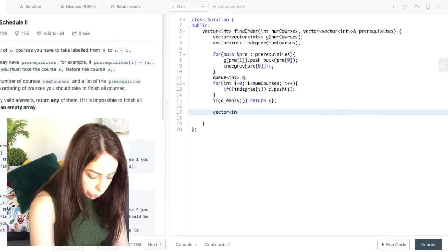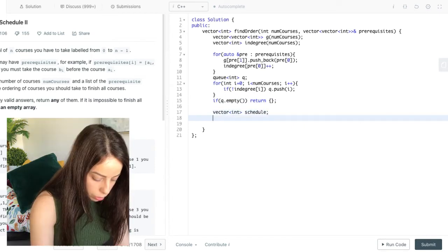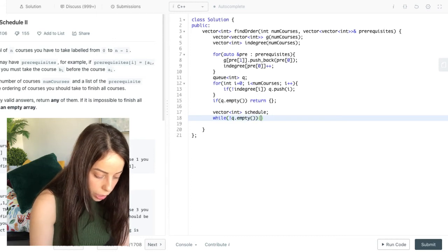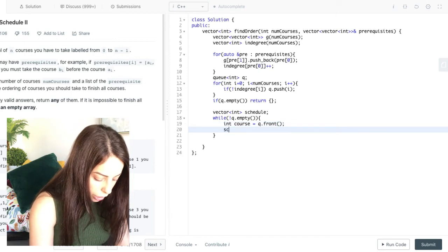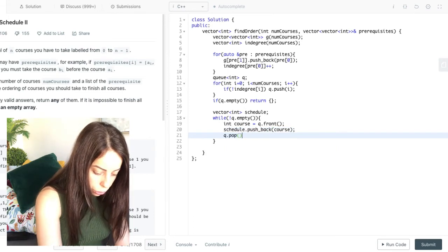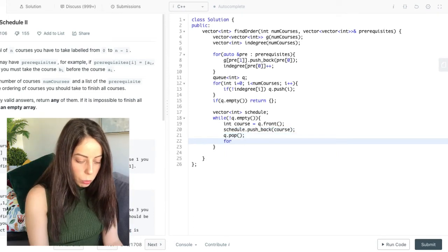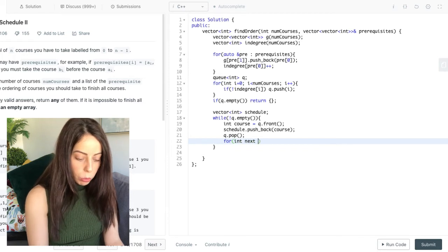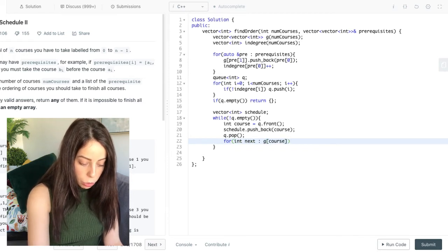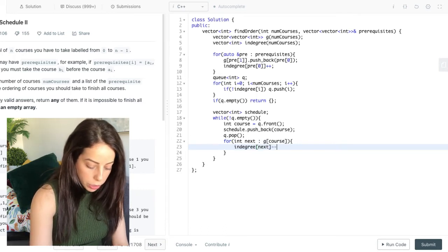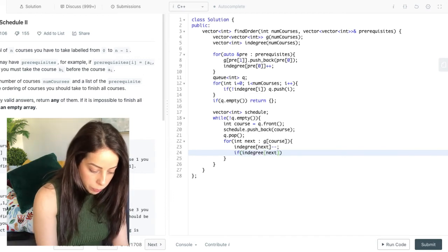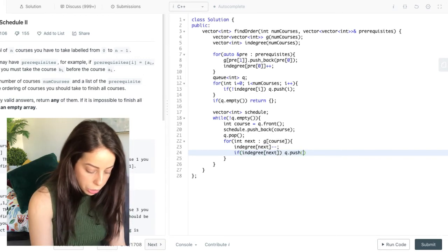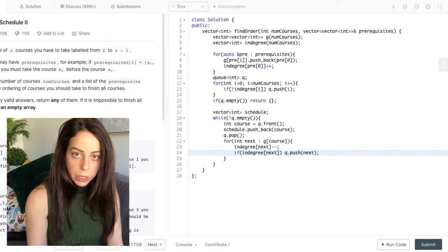Now let's define a vector for the schedule. Now while the queue is not empty, we want to take the course that is at the front of the queue. And we want to add it to our schedule. And we remove it from the queue. Now we want to iterate over the neighbors of the node we just removed. So we're going to iterate over the adjacency list of this node. And for each of the neighbors, we're going to decrease its in degree. And if the neighbors in degree has now become zero, we want to push it to our queue. Because now it is ready to be added to our schedule.